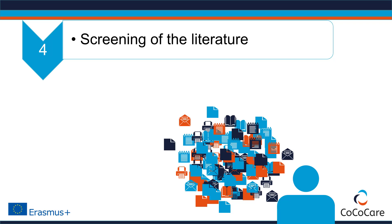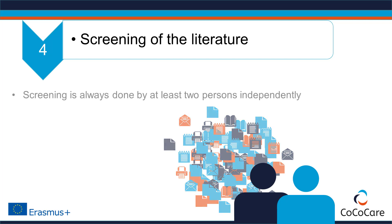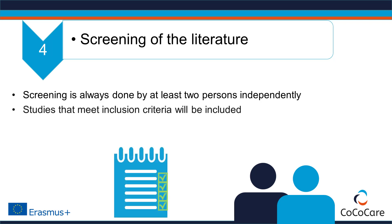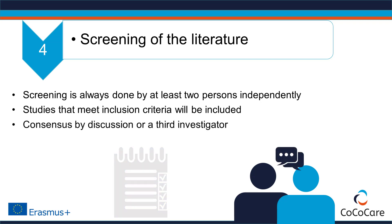A major problem with this task is that humans make mistakes. So in systematic reviews, the screening of the literature is always done by at least two people independently to minimize human error. Studies that meet inclusion criteria will be included, but if screeners disagree, they need to find consensus by discussion or by bringing in a third investigator.